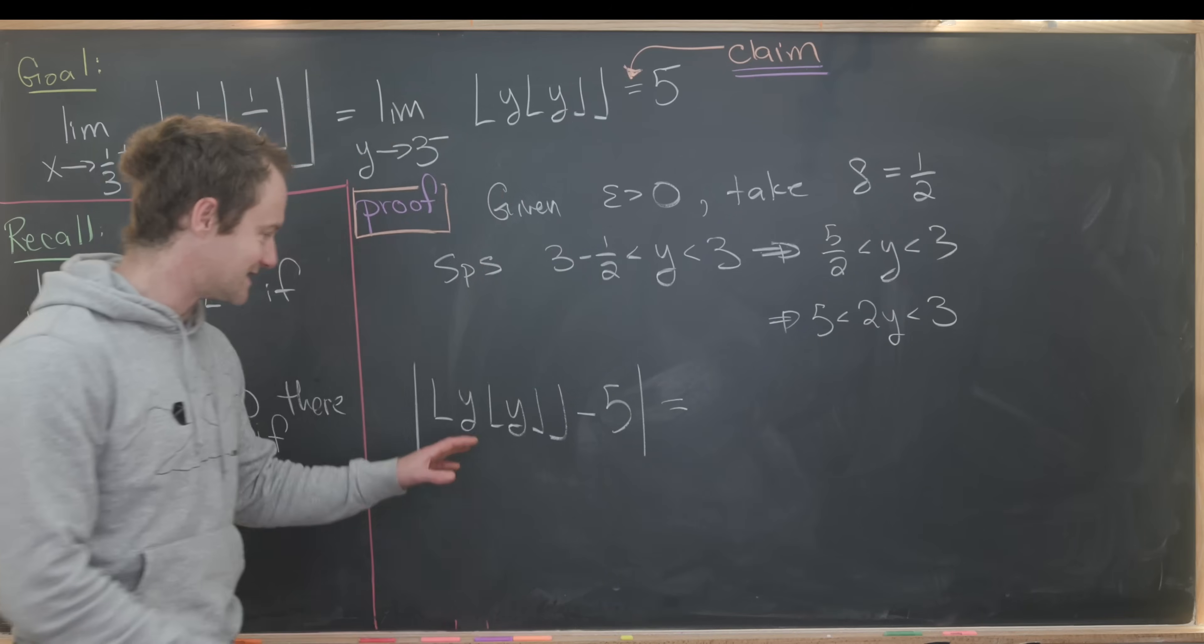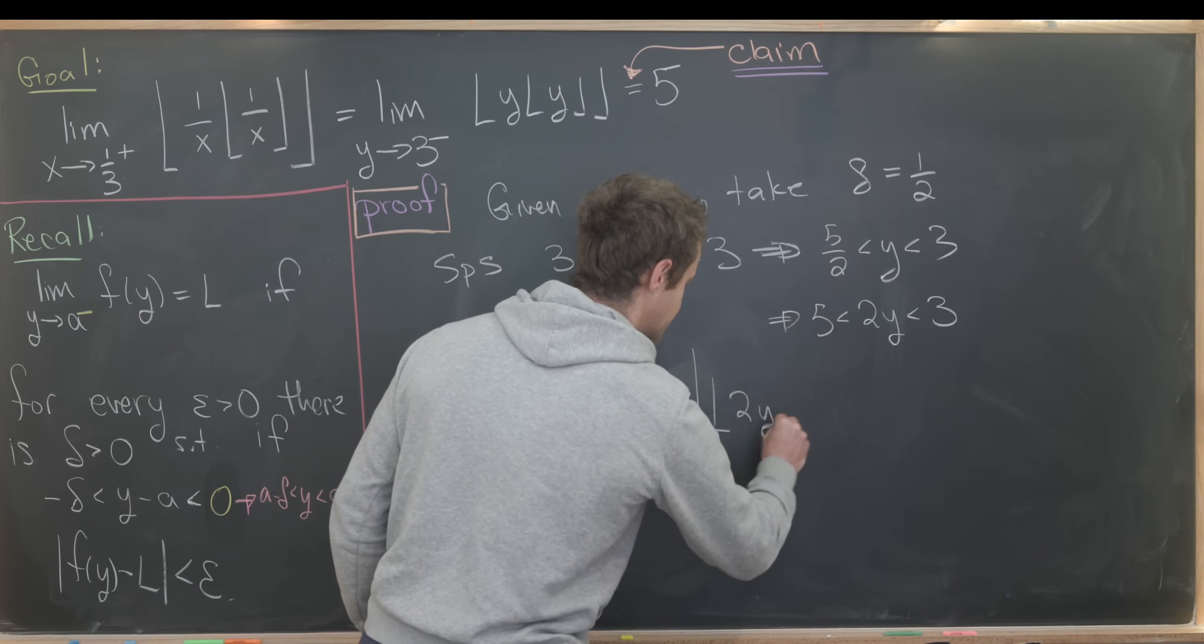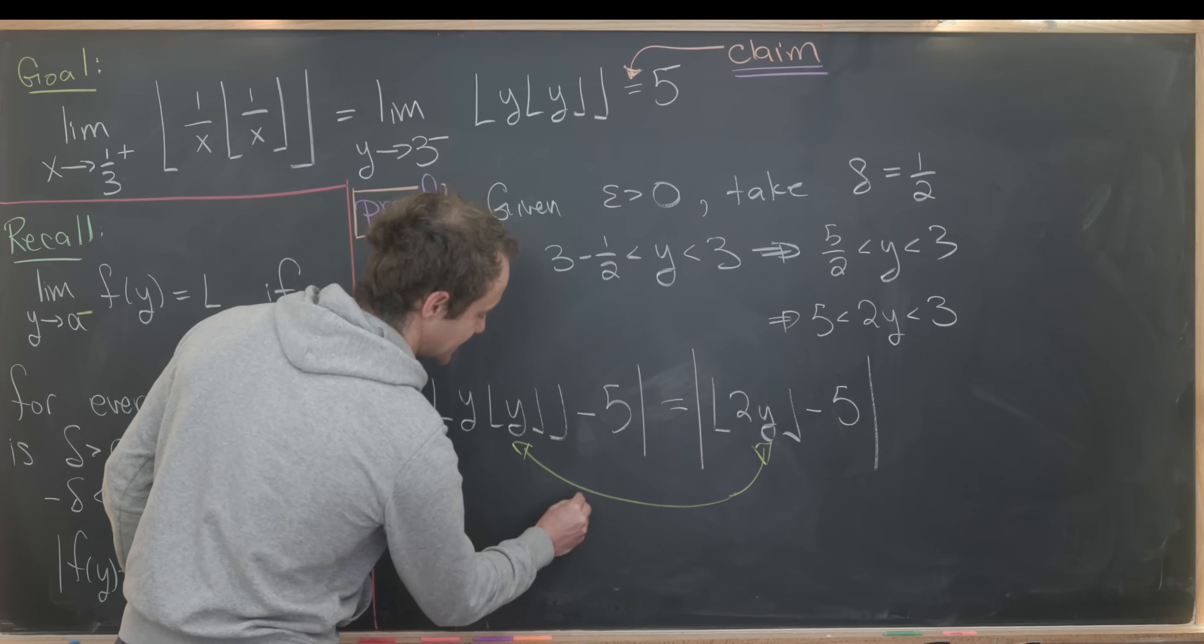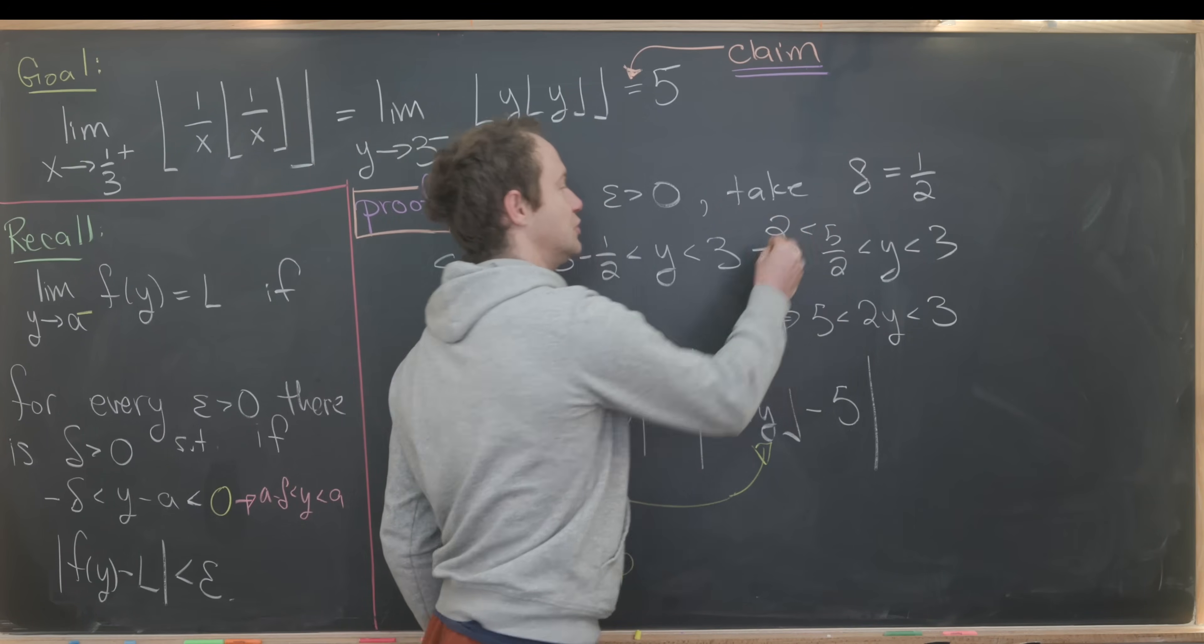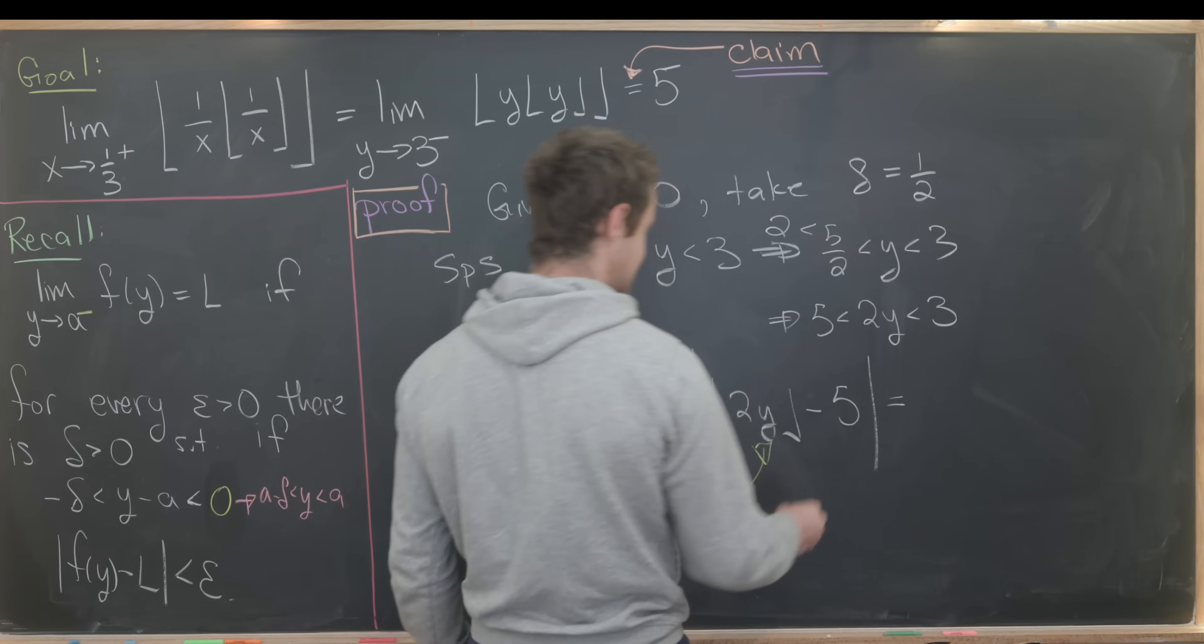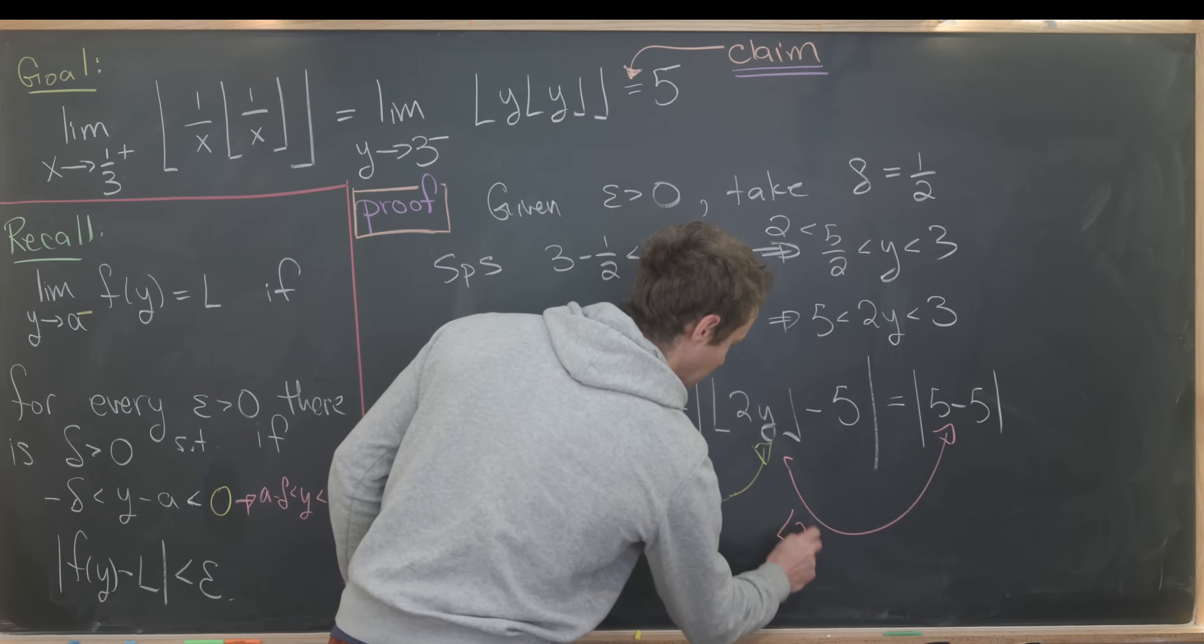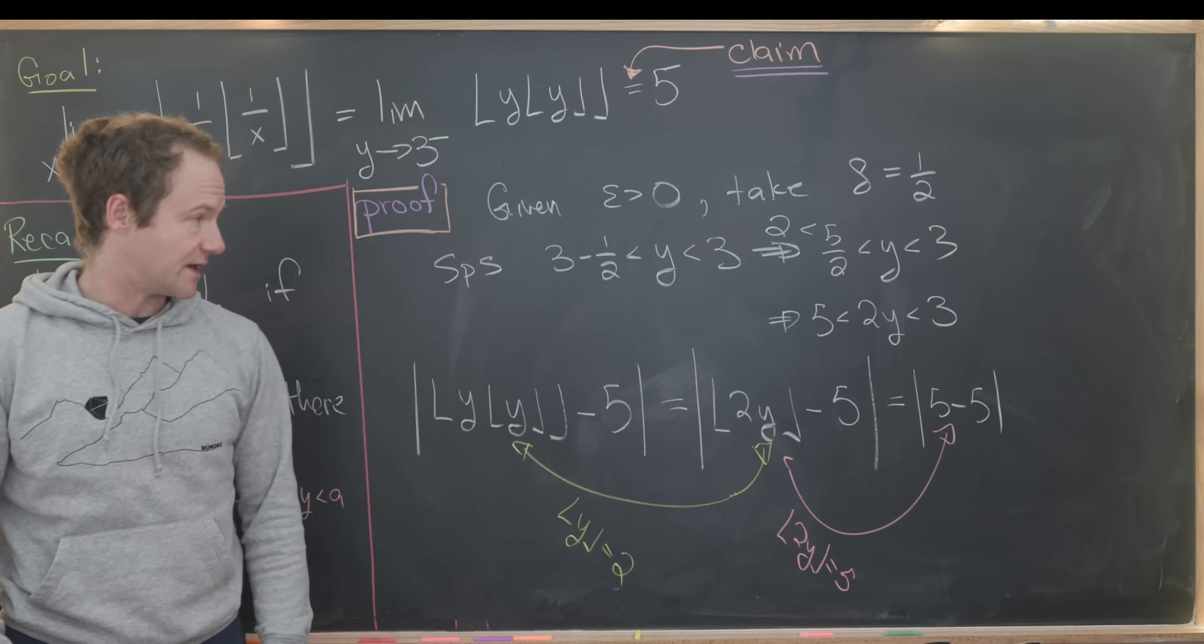We can work from the inside to the outside. Notice this is going to be the absolute value of the floor of 2y minus 5. That's because we're able to simplify this using the fact that the floor of y is 2 because we can put a 2 over on the left-hand side of this 5 halves. Then we can say that this is going to be equal to the absolute value of 5 minus 5. That is because the floor of 2y equals 5 from this inequality.